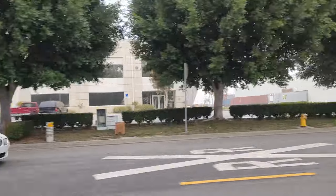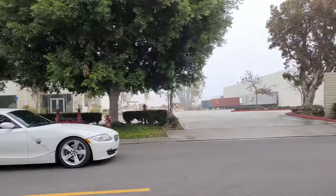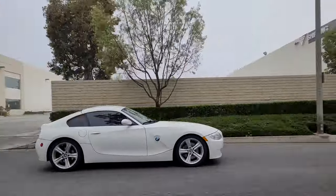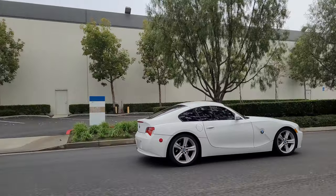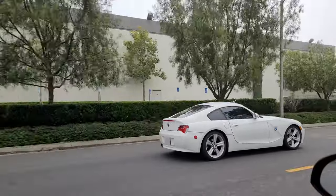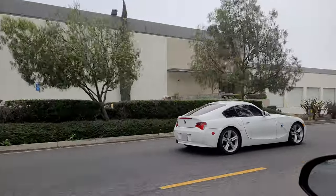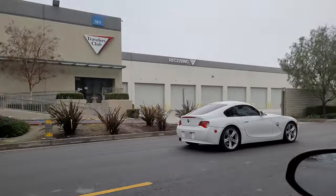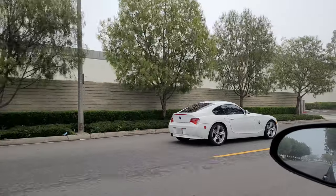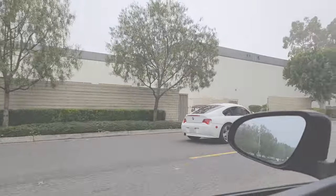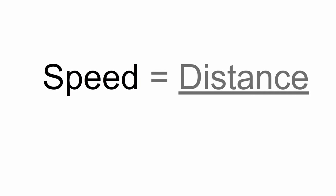So getting back to the problem: how can I match up my camera's FPS with the speed of my wheel to make it seem almost still, or barely moving? Let's break down the problem. The basic equation we need to solve for is speed, which is distance divided by time.